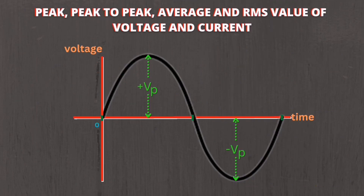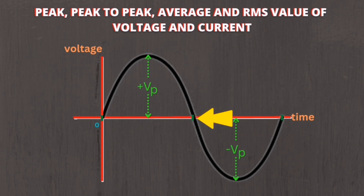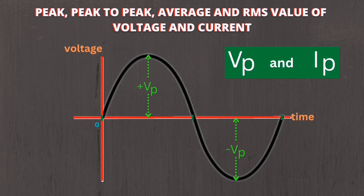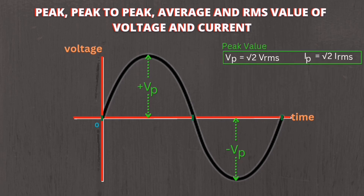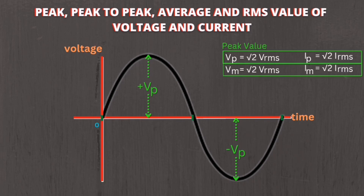First is the peak value of voltage or current. Peak value is the highest point in the graph from zero — it can also be from zero to positive peak or zero to negative peak. The peak value of voltage or current can be denoted as V-sub-P or I-sub-P respectively. The formula for V-sub-P is: V-sub-P equals square root of 2 times V-RMS, or V-sub-M equals square root of 2 times V-RMS.